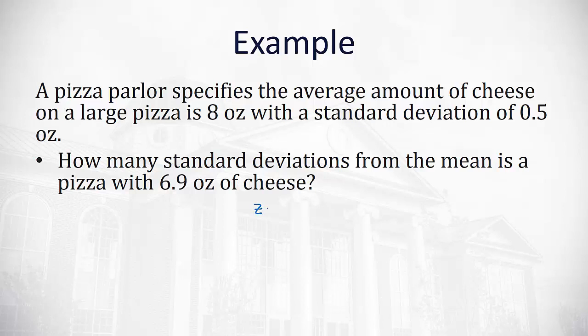We can do this using our standard normal z-score formula. So z equals the value we're interested in, the 6.9, minus the mean, 8, divided by the standard deviation of 0.5. We can do this on our calculator and I highly recommend you do this in two steps: first 6.9 minus the 8 to get negative 1.1, and then divide by the 0.5. That'll give us negative 2.2, meaning we're 2.2 standard deviations to the left of the mean.